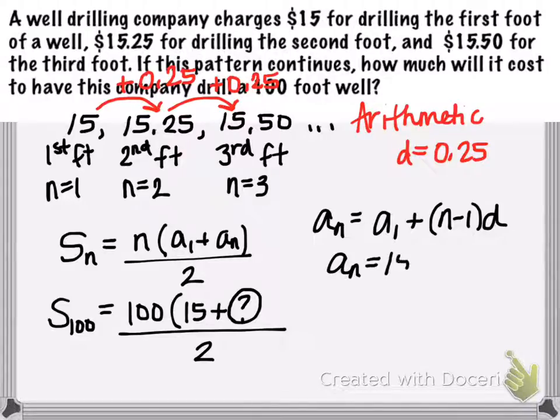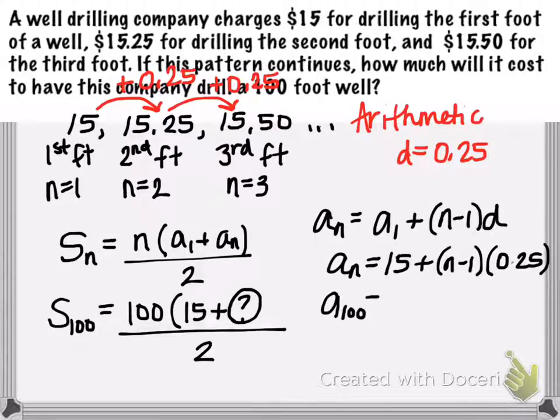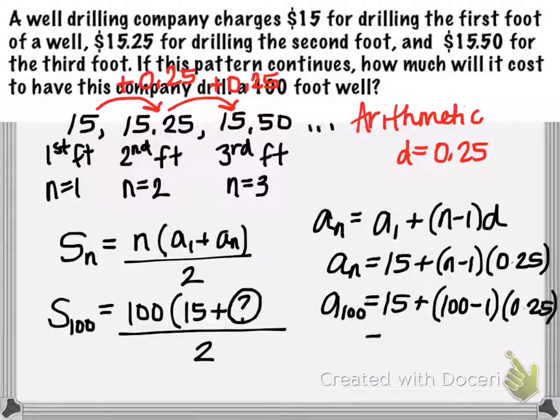So in this case, first term is 15 plus n minus 1 times 0.25. So now if we need to know how much it costs to drill the 100th foot, we want the 100th term: 15 plus 100 minus 1 times 0.25. And now we can figure out the 100th term of the sequence.